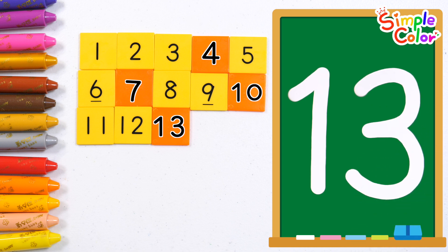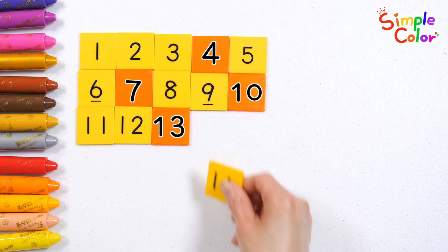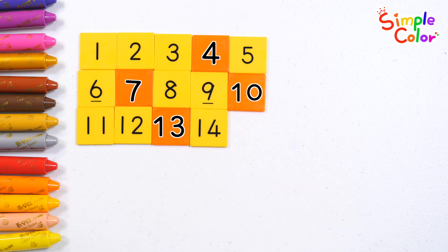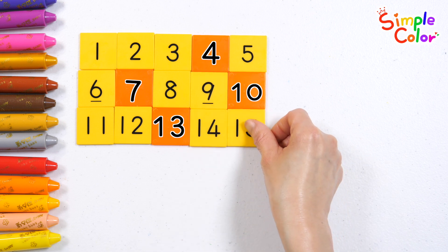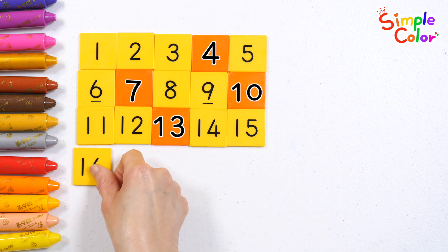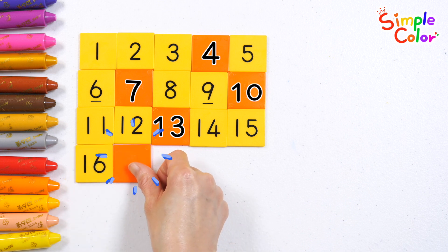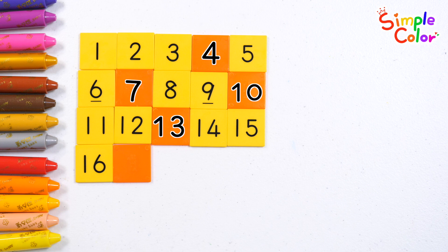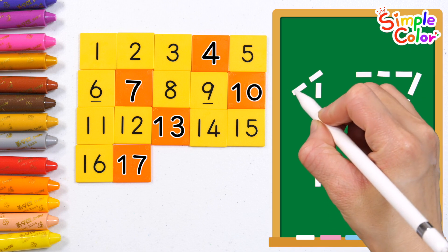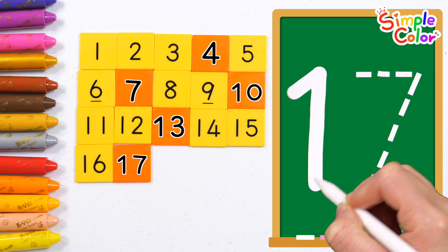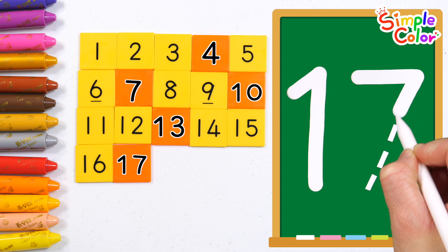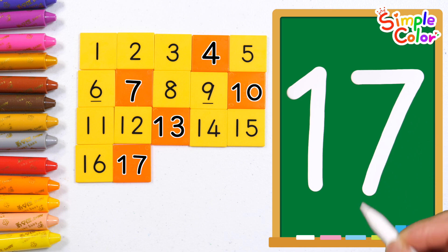13, 14, 15, 16. Guess the correct number in the orange blank. That's right, 17! Let's write the number 17 on the board. 17.